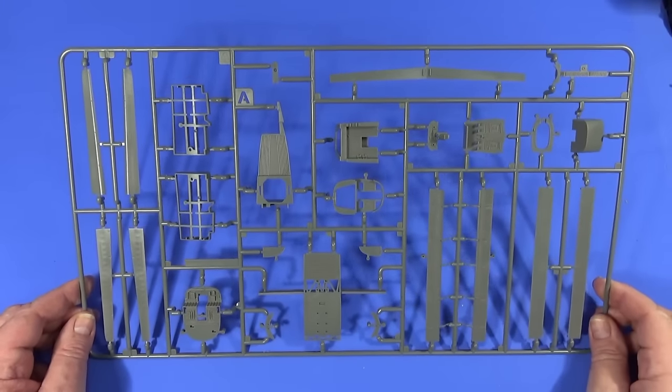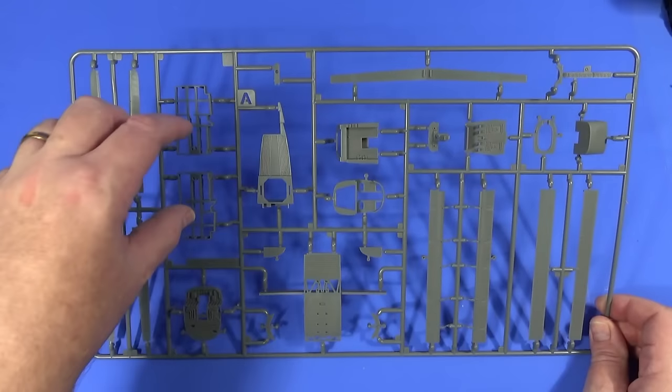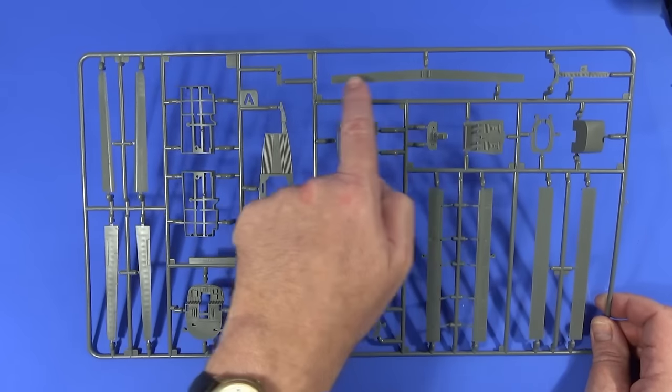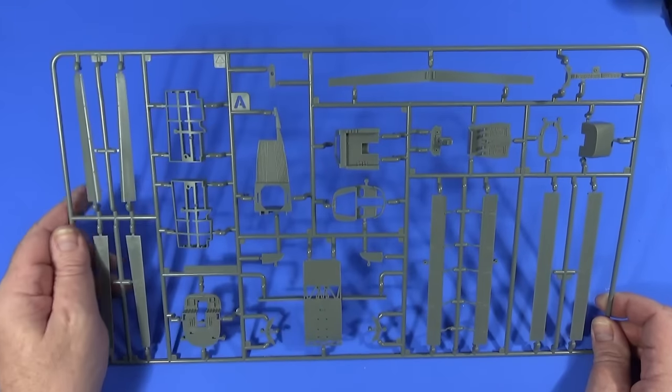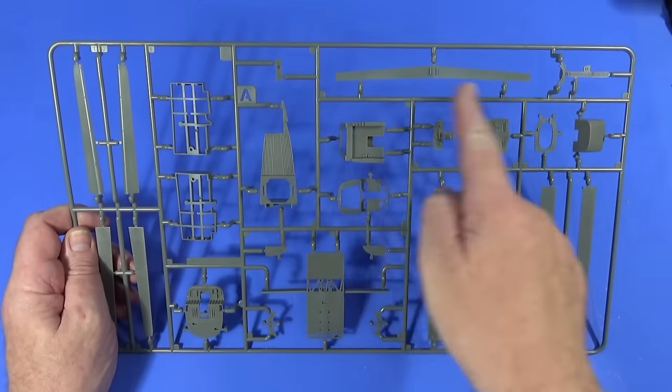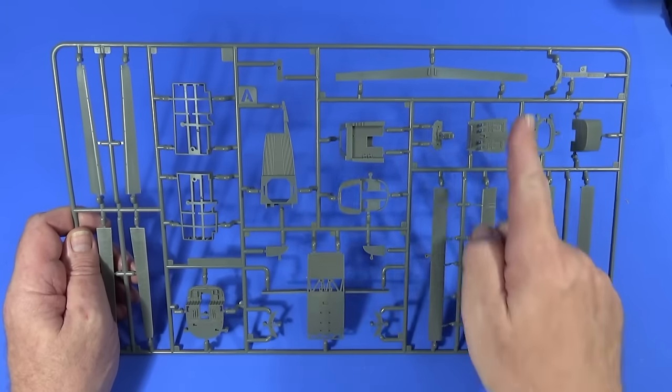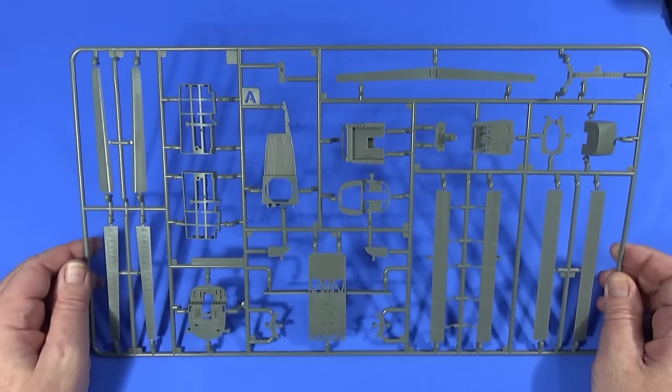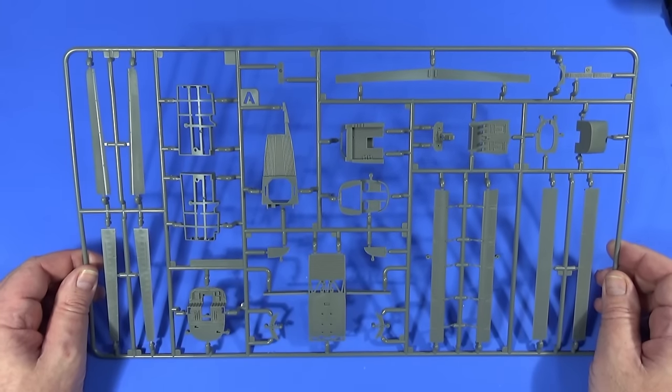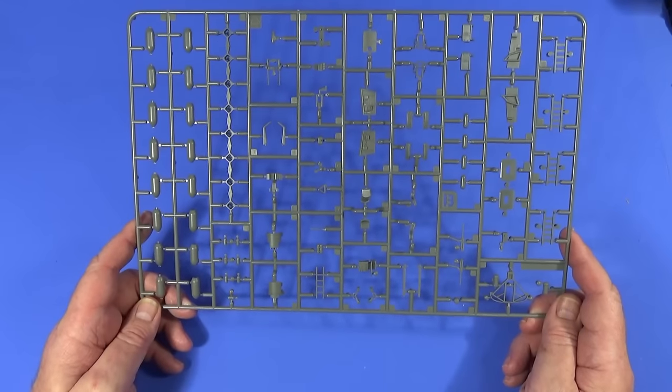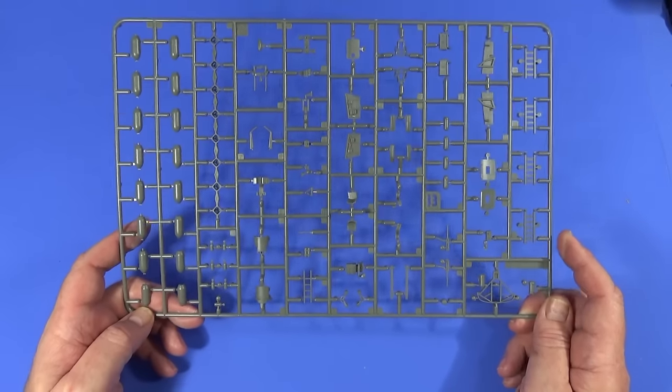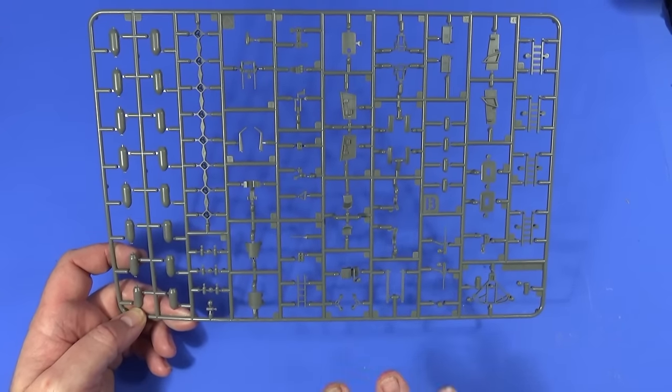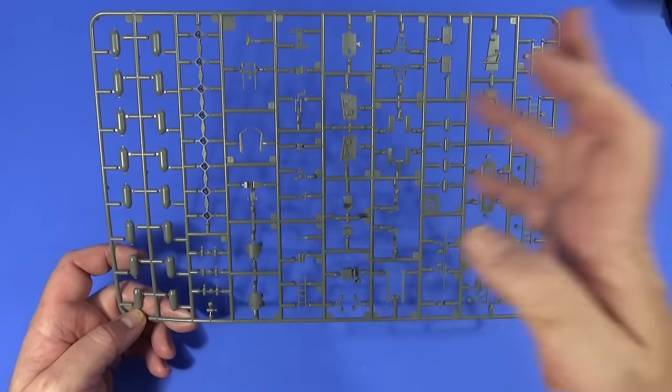Well, here we have frame A. This is largely the cockpit area, parts of the wings, the interior of the wings, the flaps, ailerons, and one of the spars. So there's the other main spars here on this part here, sort of interior structural stuff really. Frame B has the bombs, bomb racks, some of the interior of the cockpit, seats, radio sets, gunner's positions, and so on and so forth.